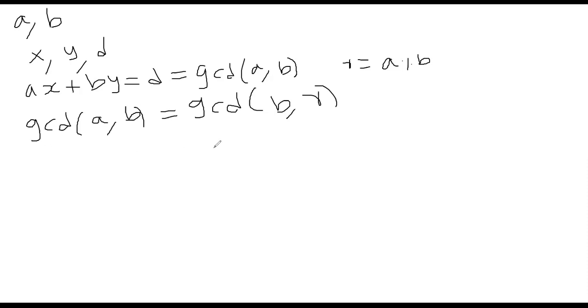Now let's assume magically we found out X1 and Y1 which satisfies this property. From this, let's assume we found out magically two pairs, X1, Y1 like this, B times X1 plus R times Y1 is equal to D. Remember GCD of A, B is same as GCD of B, R. So this must be D then.